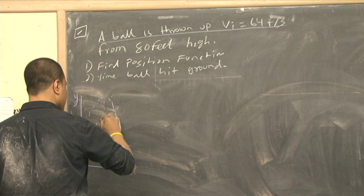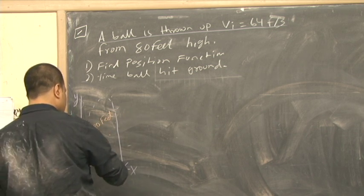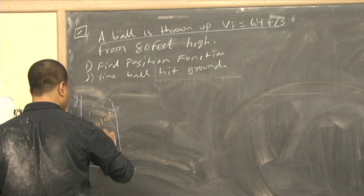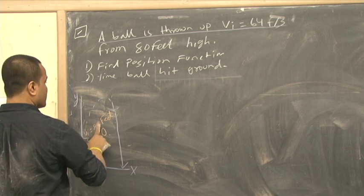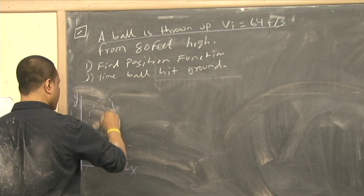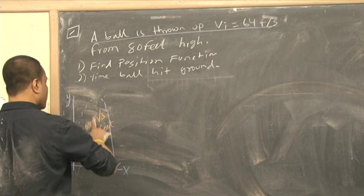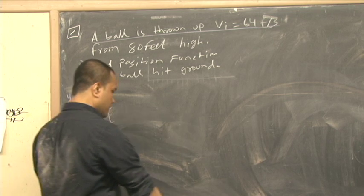The initial velocity when someone throws it is 64 feet per second. And the height, we call it S, S for height, is 80 feet.